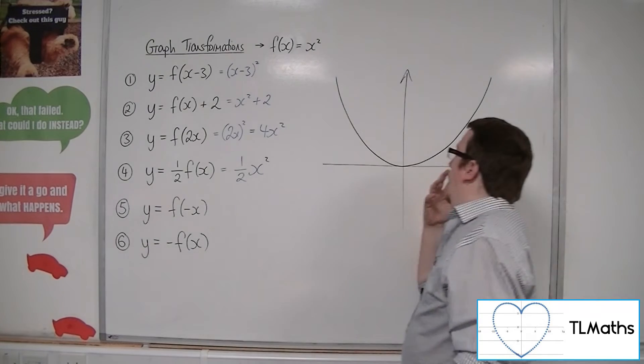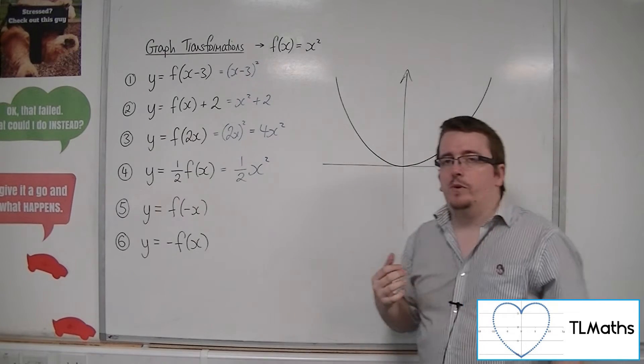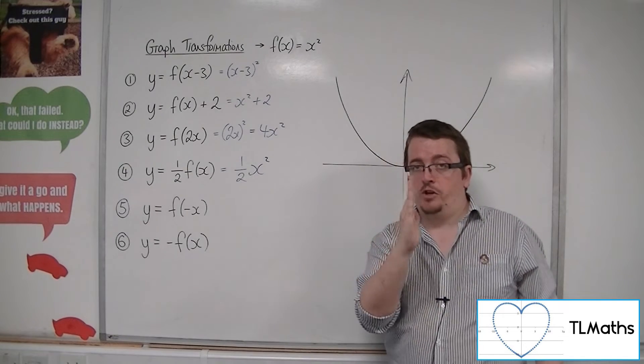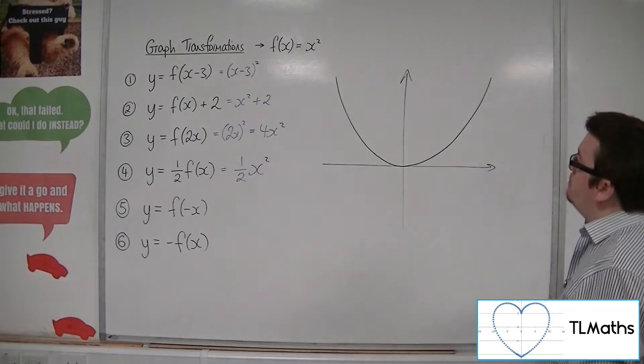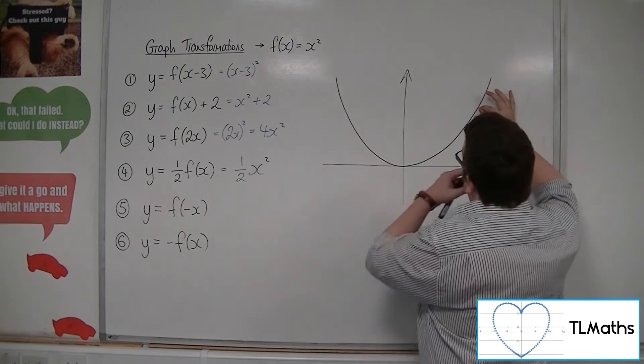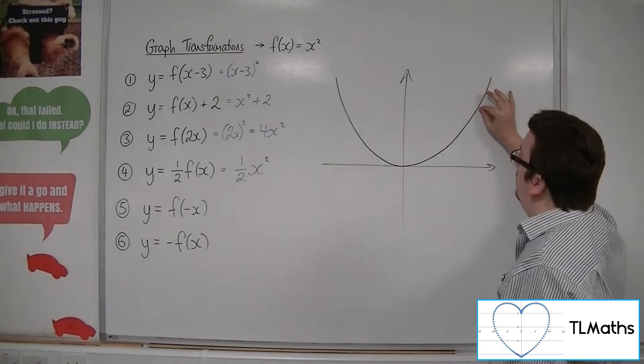However, because this parabola, y equals x squared, has a line of symmetry on the y-axis, if you change this point and you change its x-coordinate to minus,